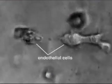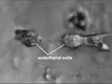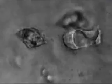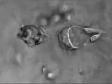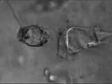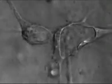In culture, endothelial cells behave in a similar way. They spontaneously develop internal vacuoles that join up from cell to cell, creating a single lumen shared by many cells.